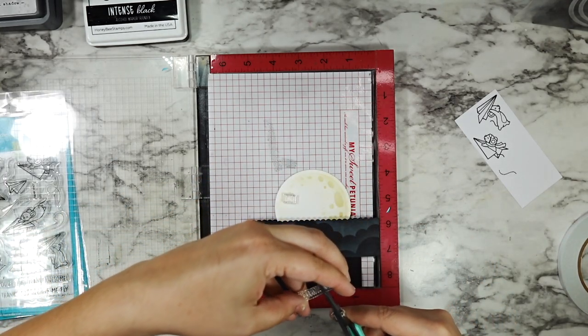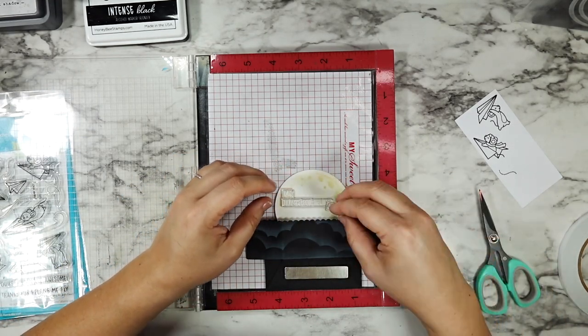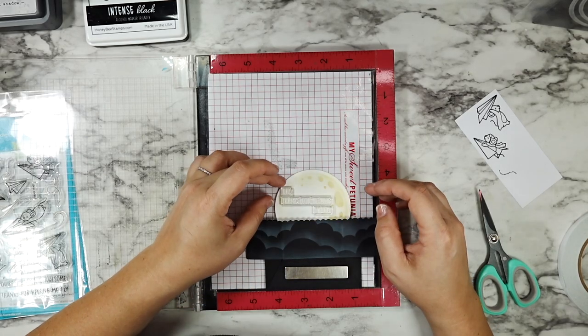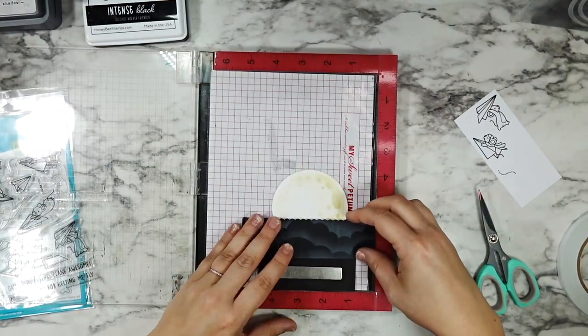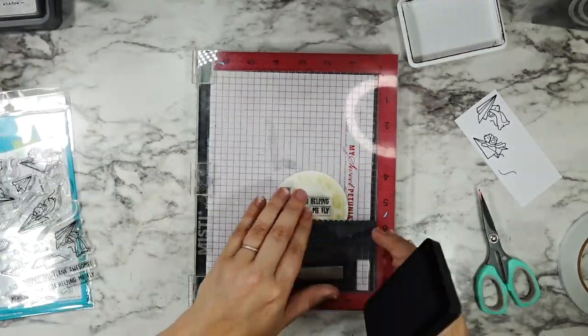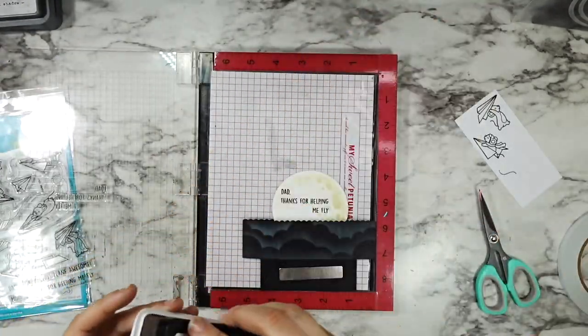So I did cut the 'to fly' off of that main larger sentiment and I want to encourage you to not be scared to do this, to make that modification if you want, because you can just line them back up and use them as one stamp later. But it also gives you more flexibility in where you can put your sentiment. So I stamped that onto the moon directly.